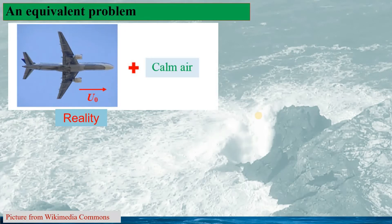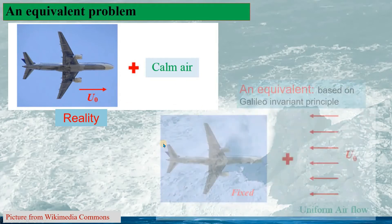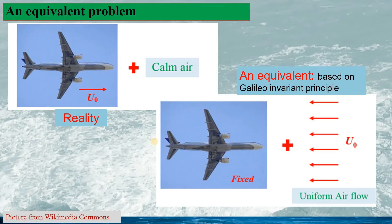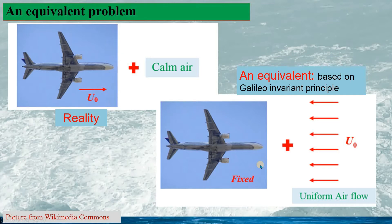We may also have an equivalent problem. For instance, in reality the airplane is traveling in calm air with velocity U0. However, in numerical study or wind tunnel tests, we generally use the equivalent formulation based on the Galileo invariant principle: we assume the plane is fixed in space and a uniform flow of velocity U0 comes to the airplane. These two are the same problem, so again we see the uniform flow in this type of application.